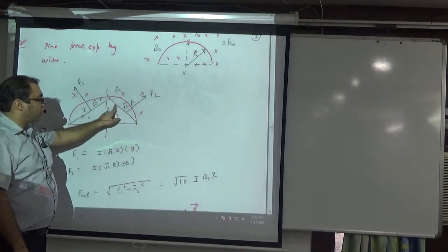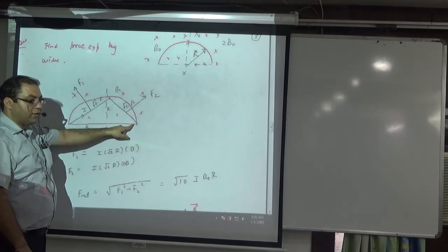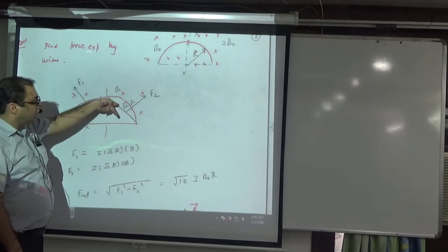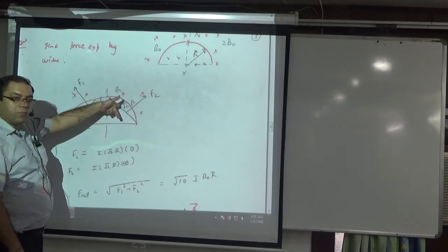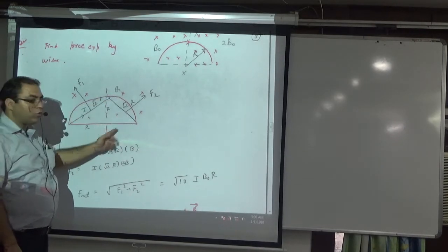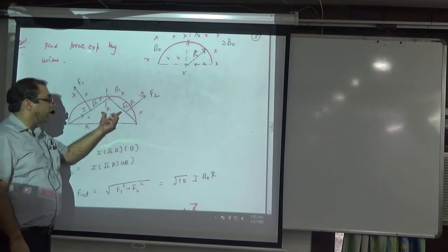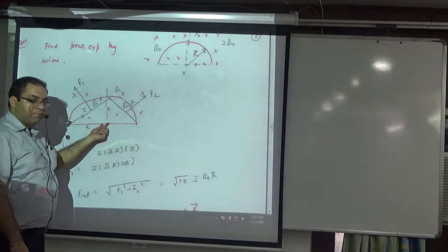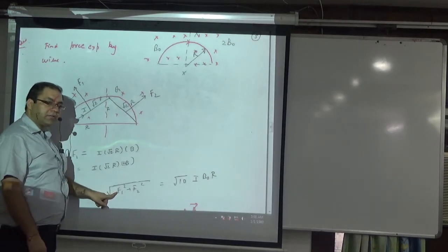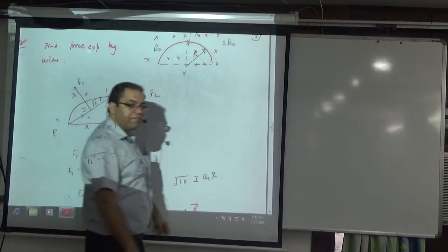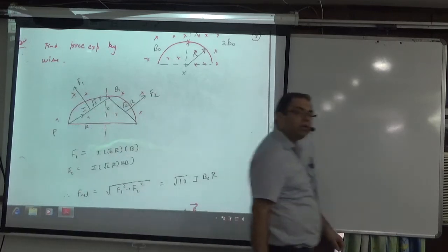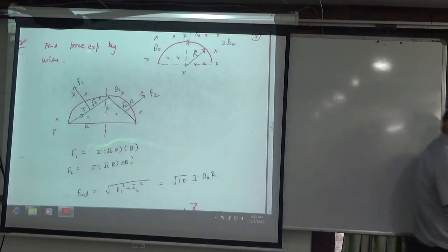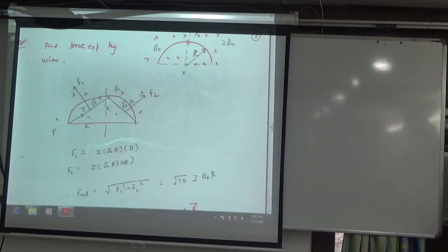Because current is falling down, the force will come down accordingly. F1 and F2 are vectors at 90 degrees to each other. So by the parallelogram law of vector addition, the net force is the square root of F1 squared plus F2 squared.